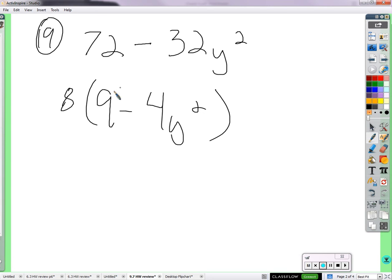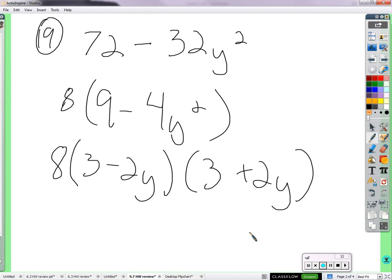But now, nine is a square, four is a square, so this would factor as three minus 2y and three plus 2y. The square root of the first minus the square root of the second. Seem good? Any questions about that one?